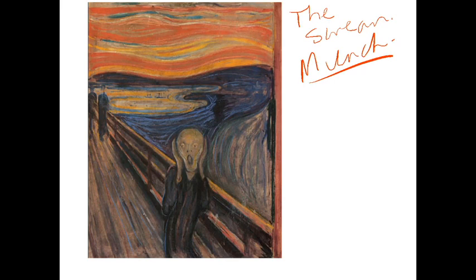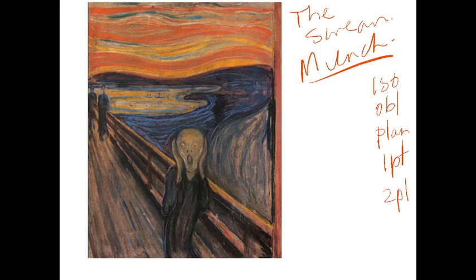So again, let's have a look at isometric, oblique, planimetric — is it one-point or is it two-point perspective? Using the same methodology as before, we're looking for some true shapes.